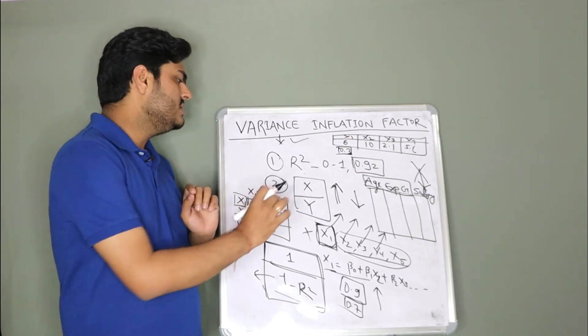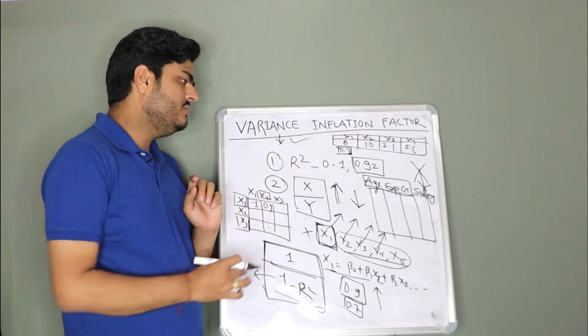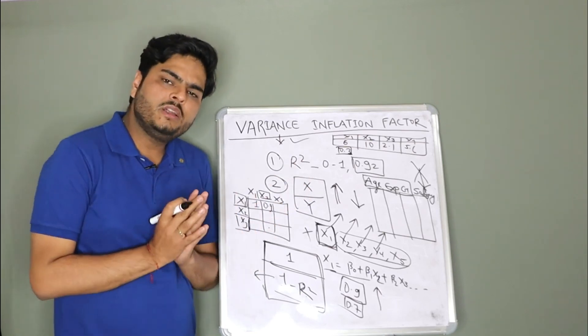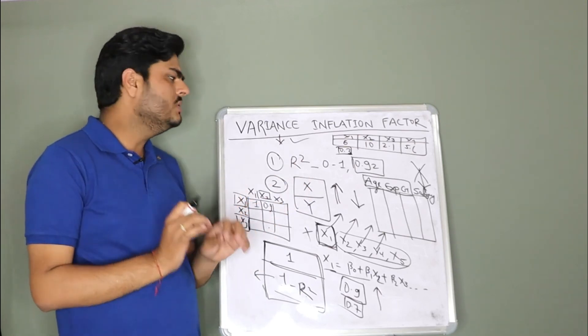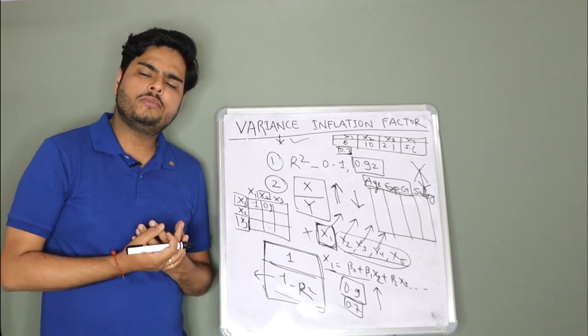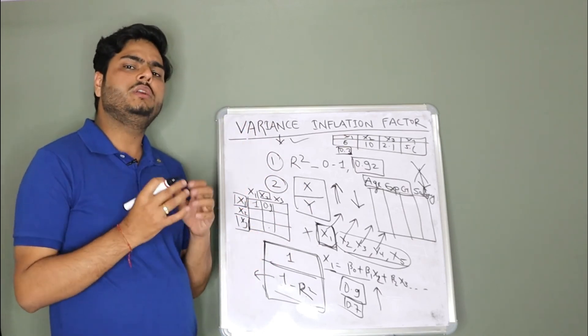Points where you can confuse is R square. Just go and watch that video which I have suggested you. And then, VIF will be absolutely clear to you. This is how you have to explain VIF tomorrow if somebody asks you in an interview.